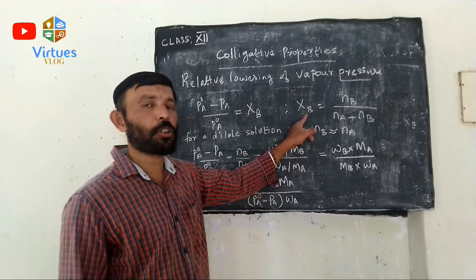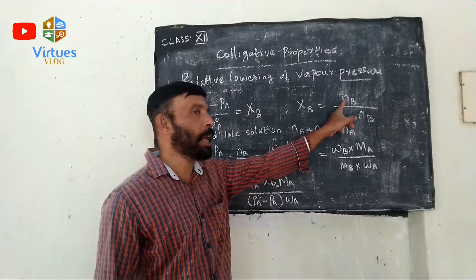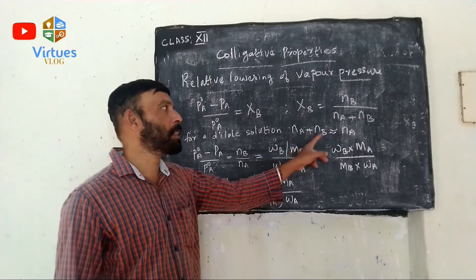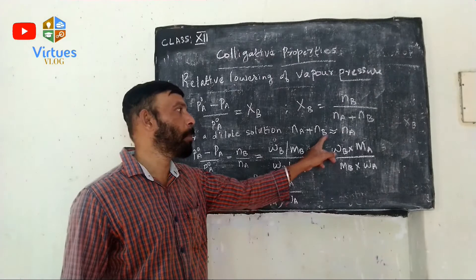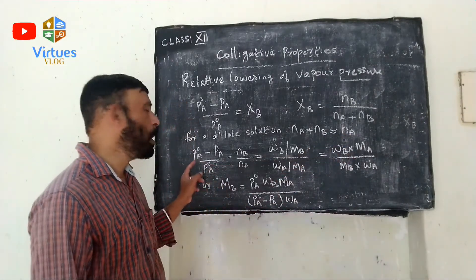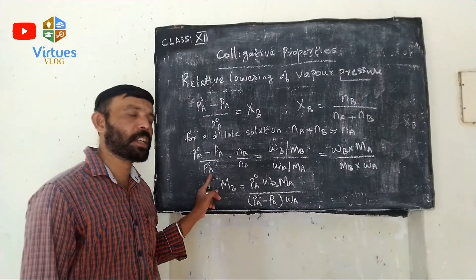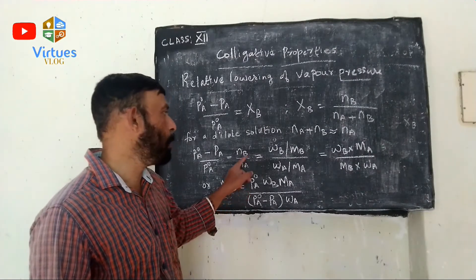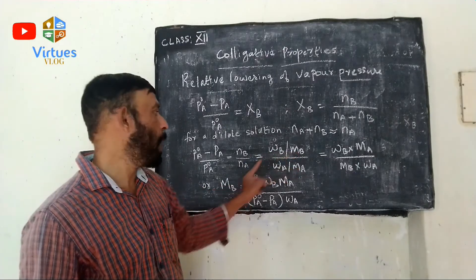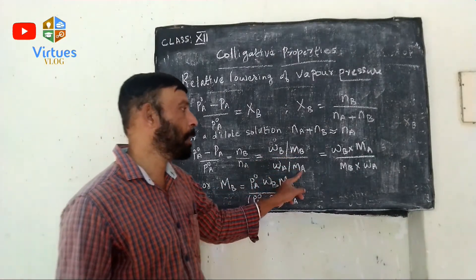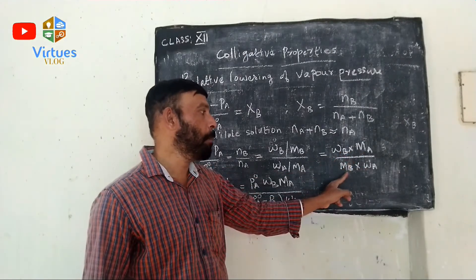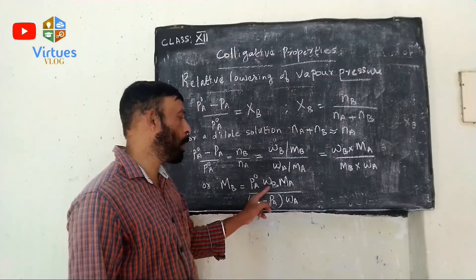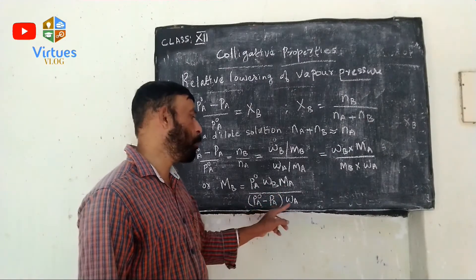We know the mole fraction of solute B, chi B, equals NB divided by (NA plus NB). But for a very dilute solution, NA plus NB is approximately equal to NA. So we can write (P0A minus PA) divided by P0A equals NB divided by NA. Since number of moles equals weight divided by molecular mass, NB equals WB divided by MB and NA equals WA divided by MA. This gives WB times MA divided by MB times WA. Rearranging for MB, we get MB equals P0A times WB times MA divided by (P0A minus PA) times WA.